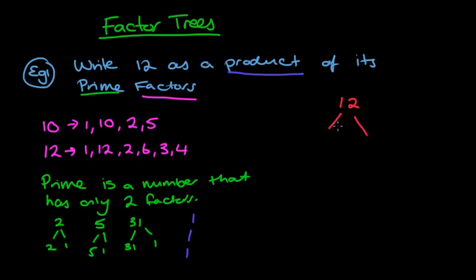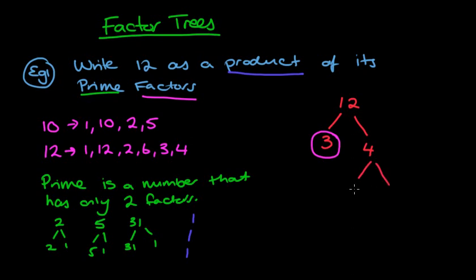So we're going to look at the number 12. Basically what this question is asking us to do is break the number 12 down into its prime factors. I want to look at two numbers that multiply together to give 12. We could use 3 and 4, or we could use 6 and 2. I don't want to use 12 and 1 because 1 isn't a prime factor and doesn't help us. So we've got 3 and 4. The minute you get a prime number such as 3, I want you to circle it — that's where that branch ends.